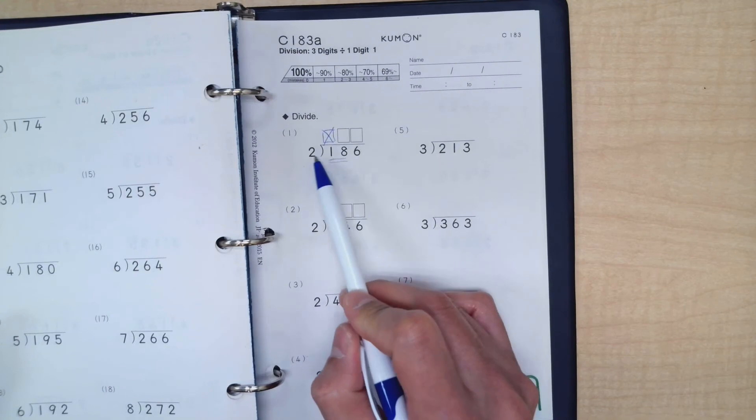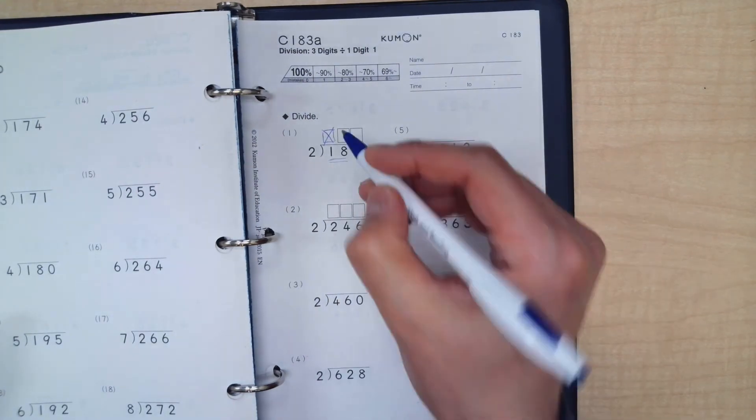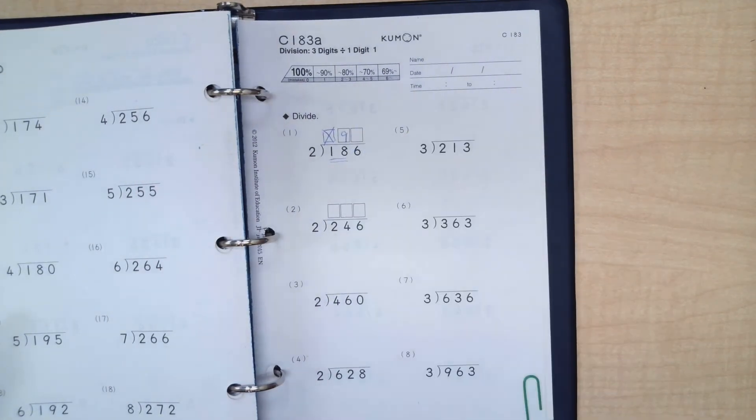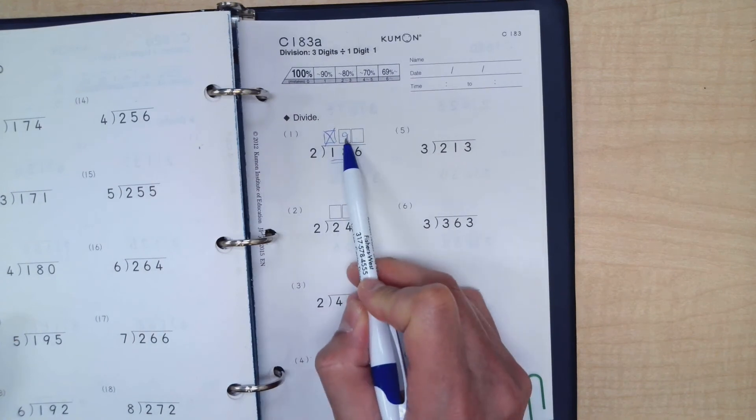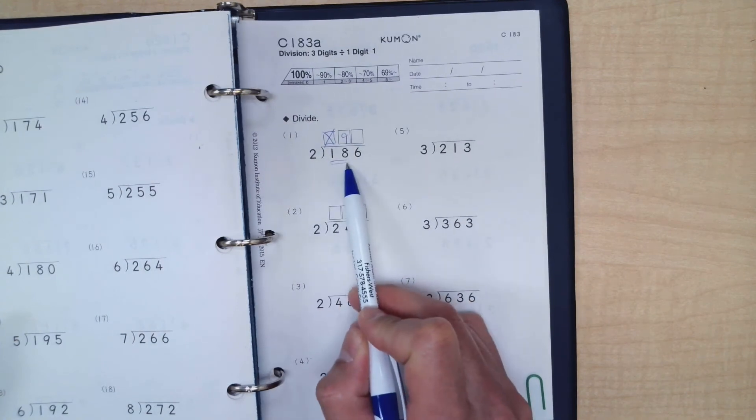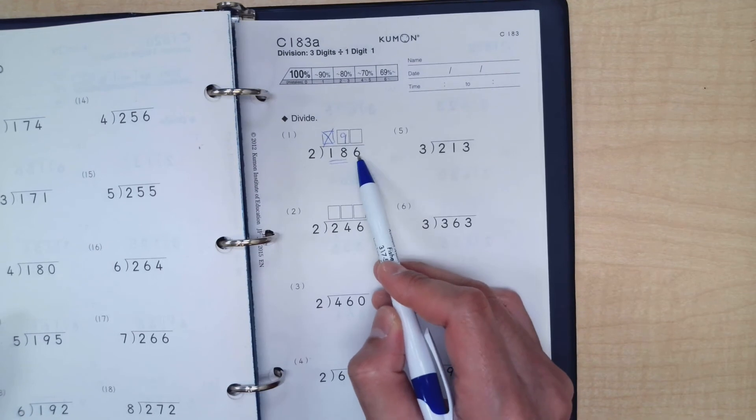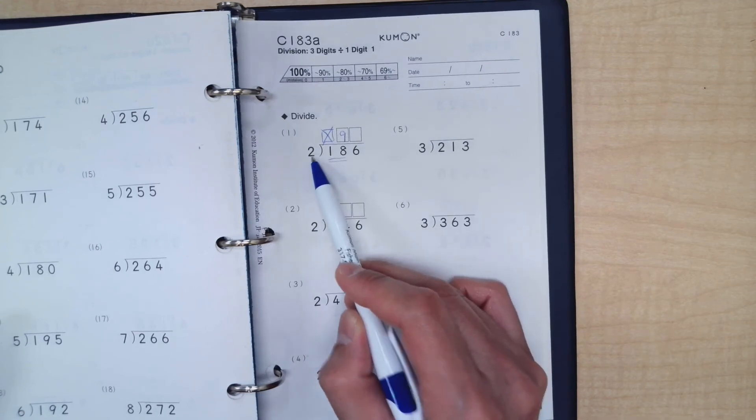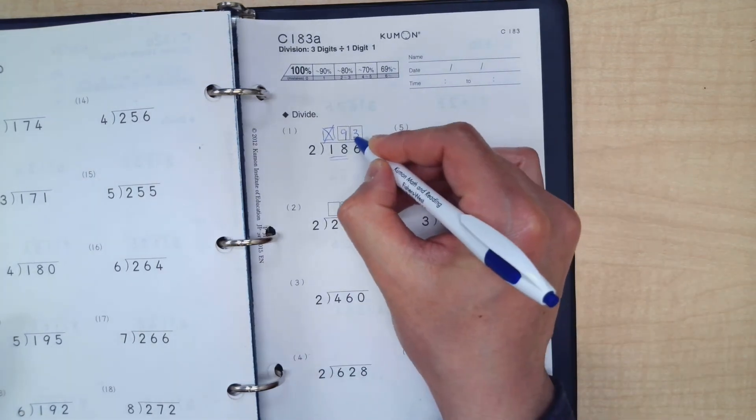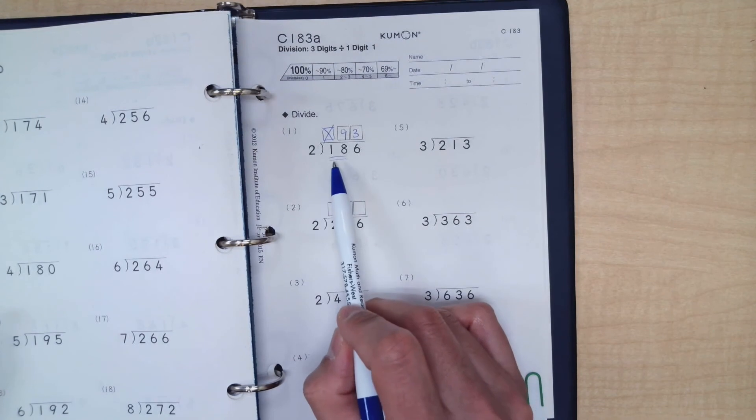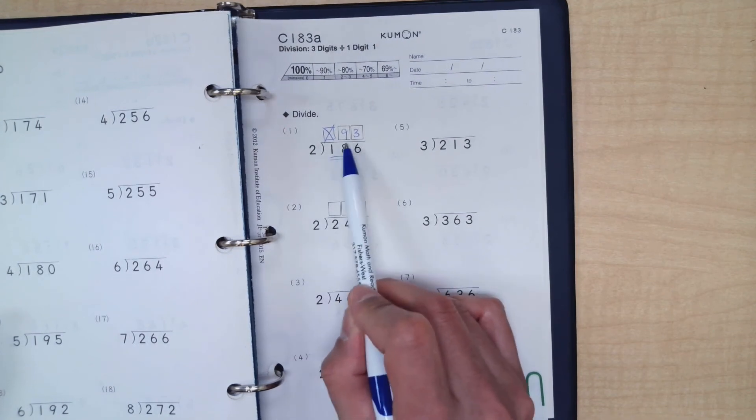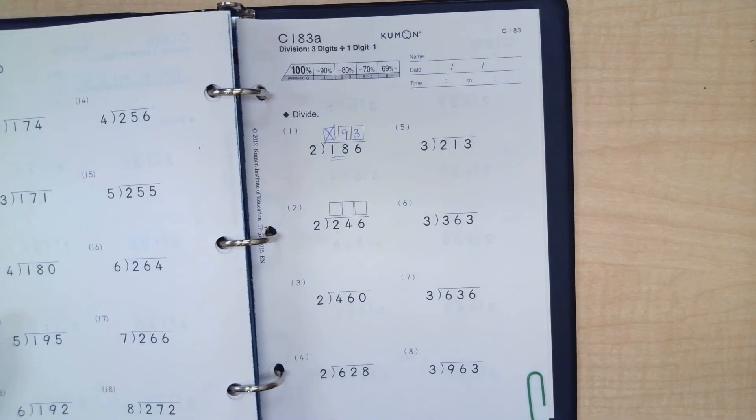What is eighteen divided by two? It is nine, because two times nine is eighteen. And let's move on to the next number. What's six divided by two? And I hope you said three. So the answer to the question, one hundred eighty-six divided by two is ninety-three.